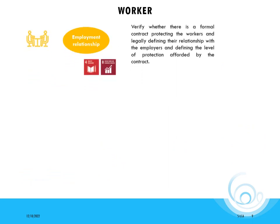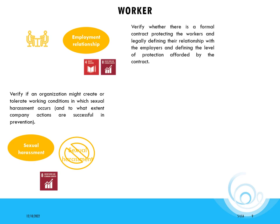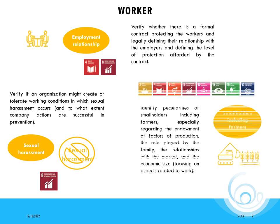The final social themes for employees are the employment relationship theme, which corresponds to the relations between employees and employers, the sexual harassment theme, and the smallholders including farmer theme — identifying peculiarities of smallholders including farmers, especially regarding the endowment of factors of production and the role played by the family.